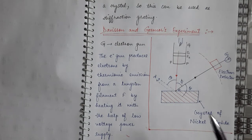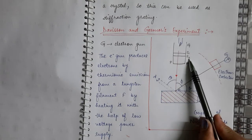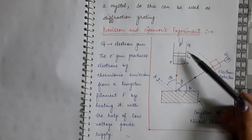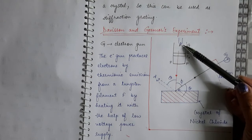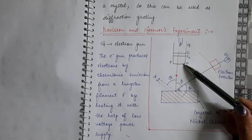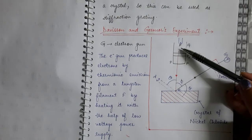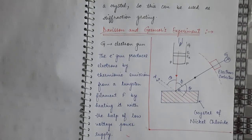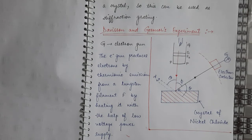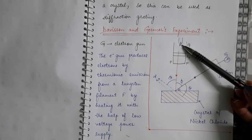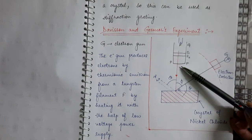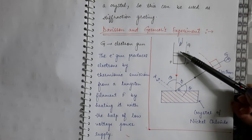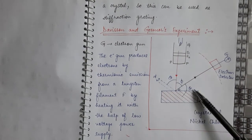To collimate the electron beam, the emitted electrons are made to pass through two slits S1 and S2. As the electron beam moves from the tungsten filament to plate PP, the positive potential is increasing, so the electron beam is accelerated. This collimated electron beam is then made to fall on the nickel crystal.